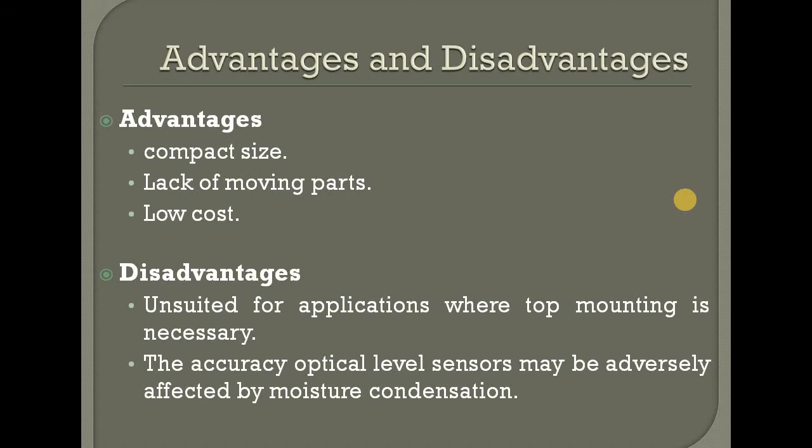The optical level sensor has advantages: compact size, lack of moving parts, and low cost. Disadvantages are that it is unsuited for applications where top mounting is unnecessary. The accuracy of optical level sensors may be adversely affected by moisture condensation. Additionally, it does not perform well if the sensor body is not clean. These are sensors with high and low cost considerations, and there is an additional disadvantage regarding conductors.